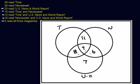30 read Newsweek, so those four regions have to add up to 30. We have 21 so far, so the only-Newsweek region has to be 9 — that adds up to 30. And finally, 40 read Time: those regions have to add up to 40. We have 23 so far, so the only-Time region has to be 17.